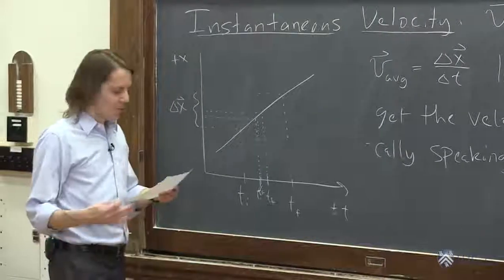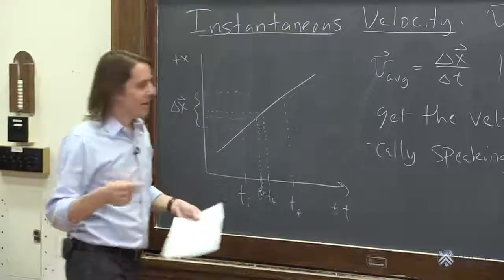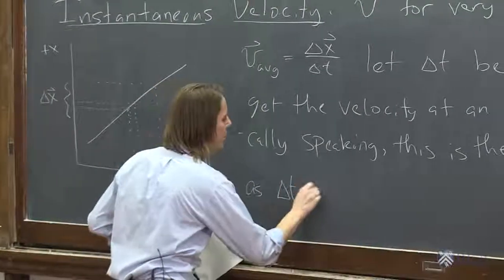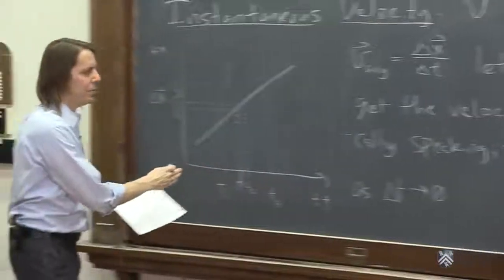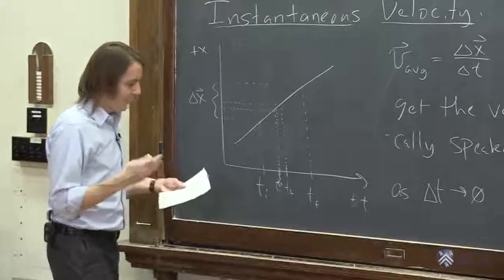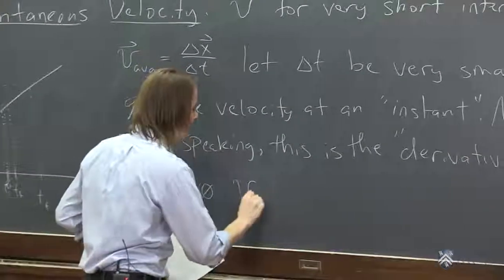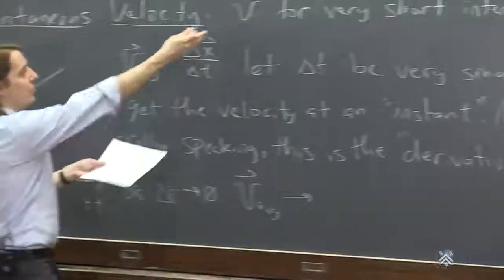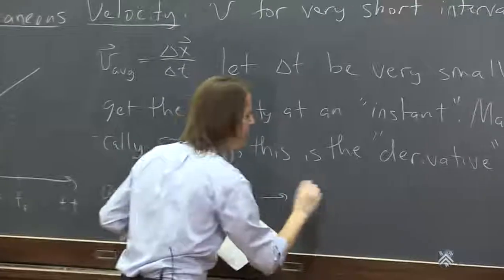But basically, this is the simple idea of the derivative. And what we mean is, as delta T goes to zero, as we make it really thin, then basically, the V average becomes, it goes towards this thing we just call V, the V instantaneous.